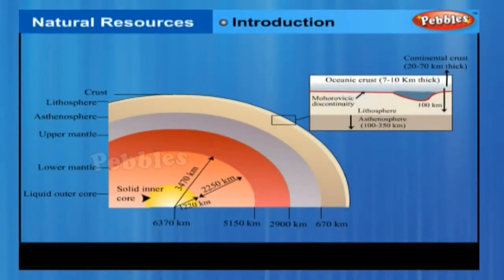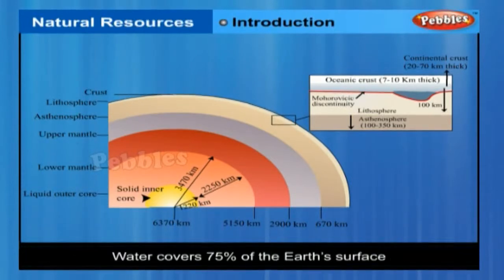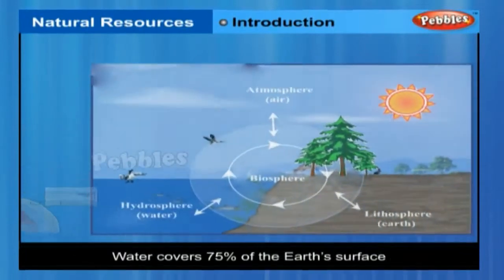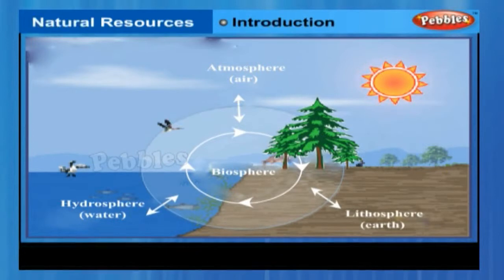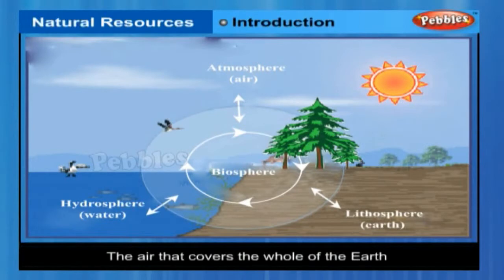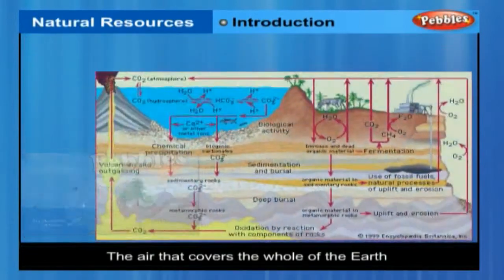The outer crust of the earth is called the lithosphere. Water covers 75% of the earth's surface and is also found underground — these comprise the hydrosphere. The air that covers the whole of the earth like a blanket is called the atmosphere.